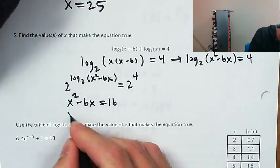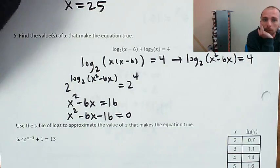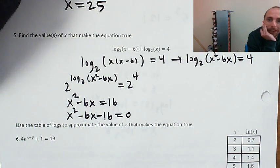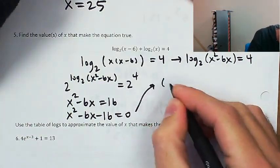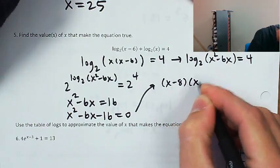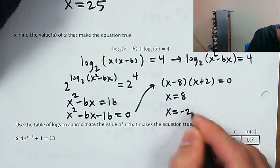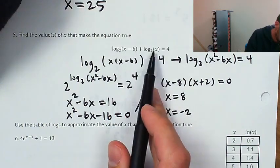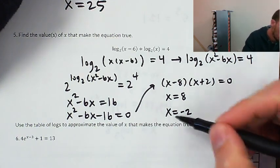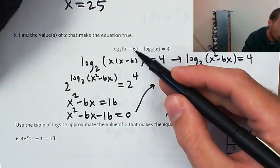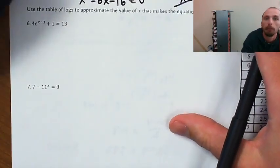I'm going to subtract 16 from both sides and set it to zero: x squared minus 6x minus 16 equals 0. I need two numbers that multiply to negative 16 and add to negative 6 — that's negative 8 and positive 2. So (x minus 8)(x plus 2) equals 0, meaning x equals 8 or x equals negative 2. Checking x equals 8: log of (8 minus 6) and log of 8 — those are fine, not taking the log of zero or a negative. But plugging in x equals negative 2 gives two logs of negative numbers, neither of which are defined, so that's an extraneous solution.